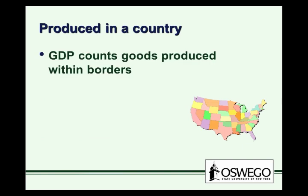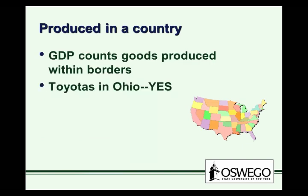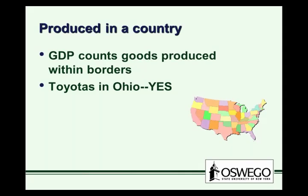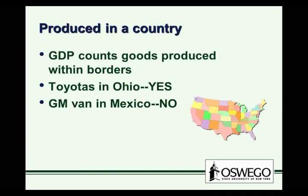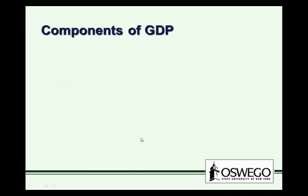GDP counts goods produced within the country's borders. Toyotas — Corollas produced in Ohio — are in the U.S. gross domestic product. A General Motors van produced in a plant in Mexico would not be in the gross domestic product. When inputs are made elsewhere, we also have to make adjustments in the final product. We're counting goods produced in the United States, not necessarily the ownership of the factory.